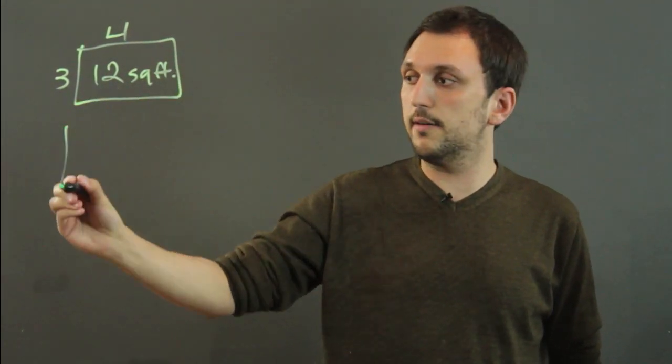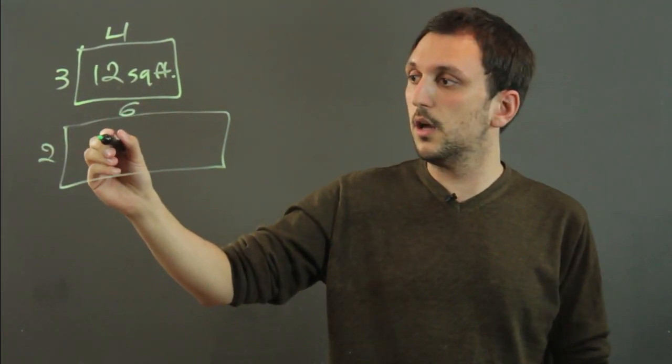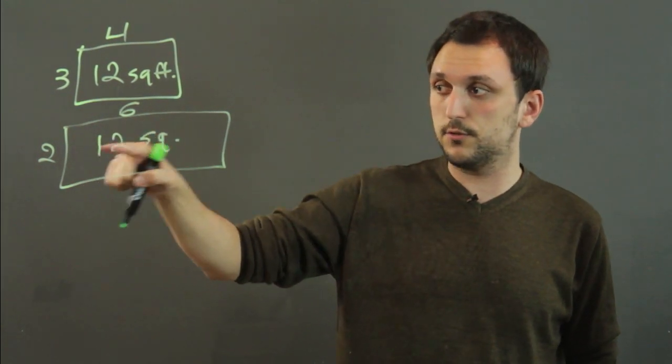But you can also have another rectangle of 6 by 2 and this would be 12 square feet because this also is 6 times 2 equals 12.